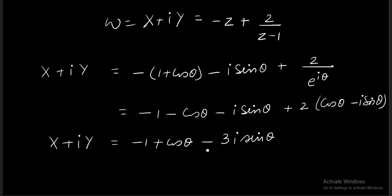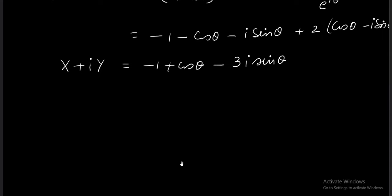So still I am not feeling like keeping small x and small y here. I am proceeding with sin theta cos theta only. Capital X we get is cos theta minus 1. Capital Y is minus 3 sin theta.